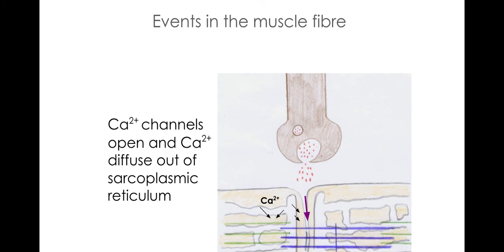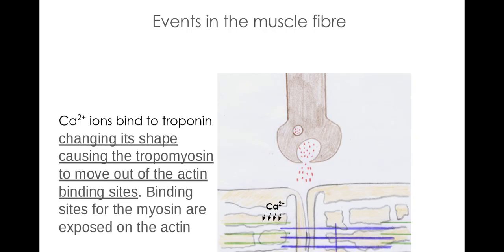Now as in the previous video linking into the sliding filament theory, when calcium ions are released from the sarcoplasmic reticulum, they then bind to troponin changing its shape, causing tropomyosin to move out the way of the actin binding sites.